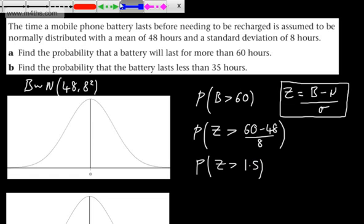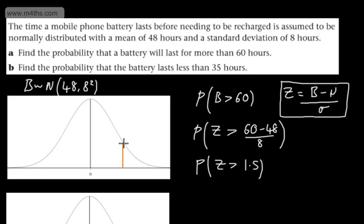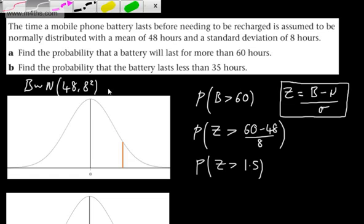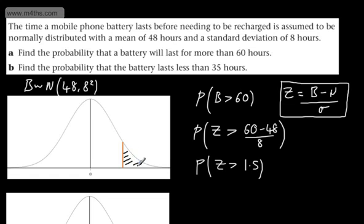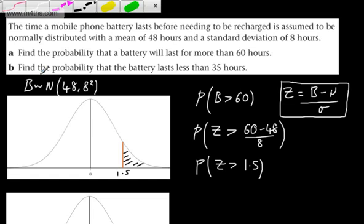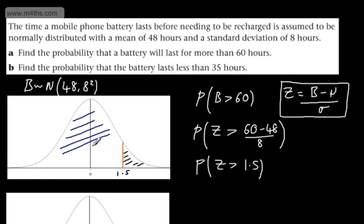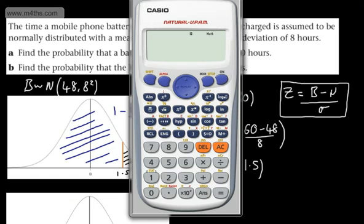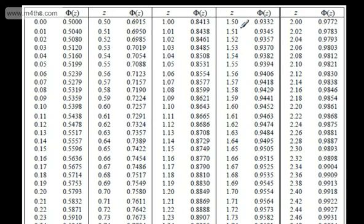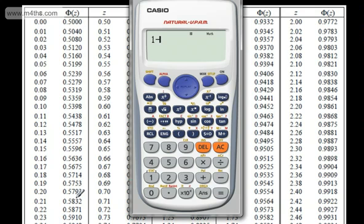Drawing this up, we place 1.5 on the standard normal curve. We're interested in the area trapped under the curve to the right of 1.5. Our tables give the area to the left, which is Φ(1.5). Looking that up, Φ(1.5) equals 0.9332, so we compute 1 minus 0.9332.